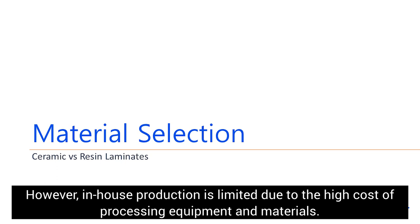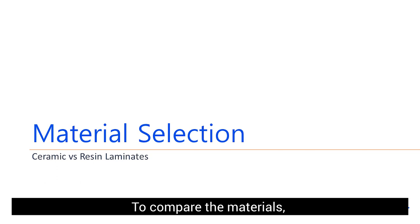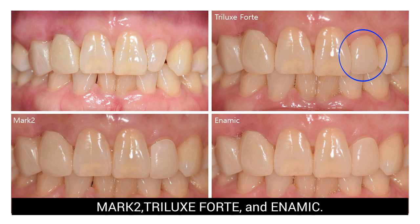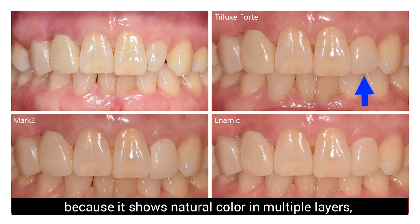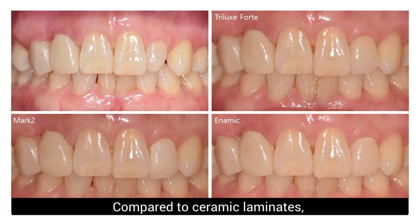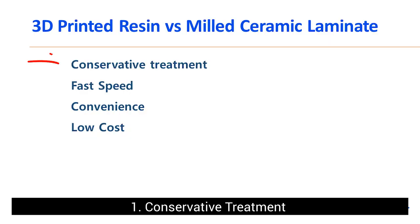A common laminate material is ceramic; however, in-house production is limited due to the high cost of processing equipment and materials. Let me introduce you to the possibility of 3D printed resin laminates. To compare the materials, a laminate on tooth number 22 was fabricated with Mark 2, Trilux Forte, and Anamic. The patient chose Trilux Forte because it shows natural color in multiple layers rather than single-color materials like Mark 2 and Anamic.